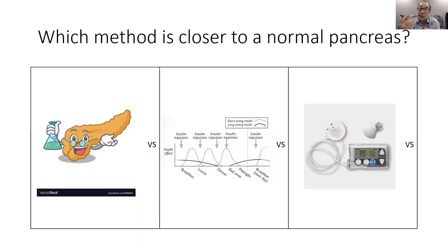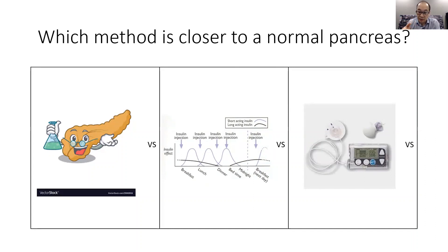With multiple daily injections, you would be giving yourself insulin with a pen — it forms a depot underneath your skin that slowly dissolves, and then the insulin gets into circulation. Compared with an insulin pump, which slowly infuses insulin subcutaneously without making a big depot — the pump is steadily secreting and infusing insulin, which is picked up by the bloodstream. So an insulin pump is closer to the secretion pattern of a normal pancreas.